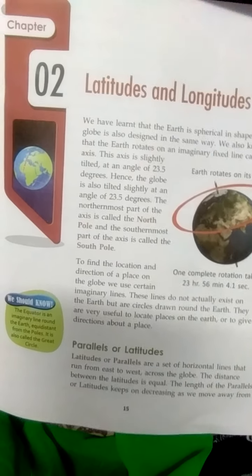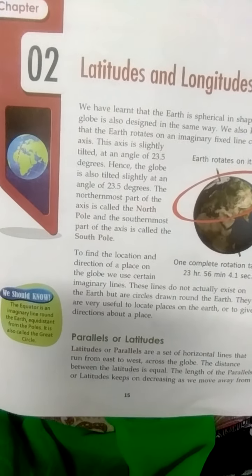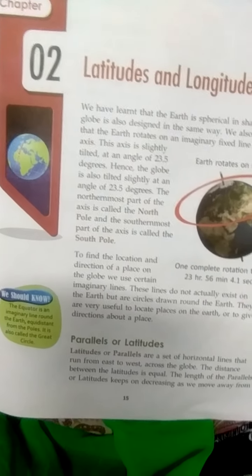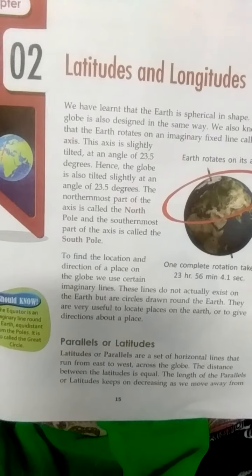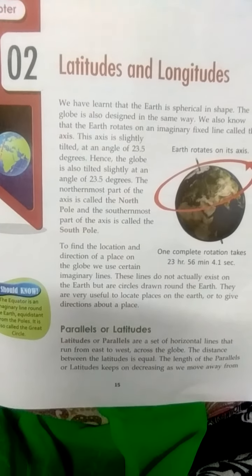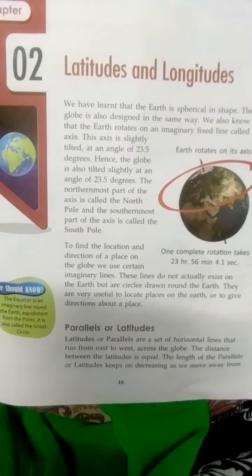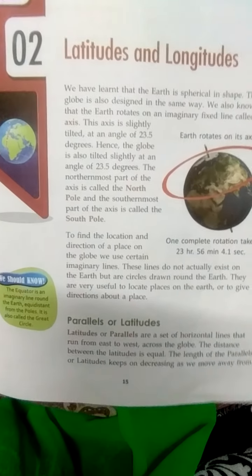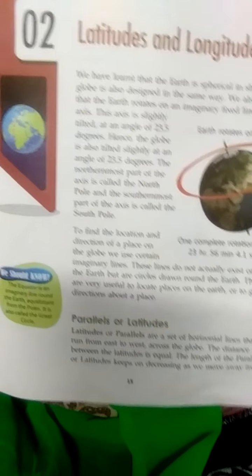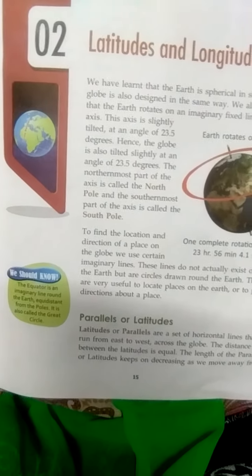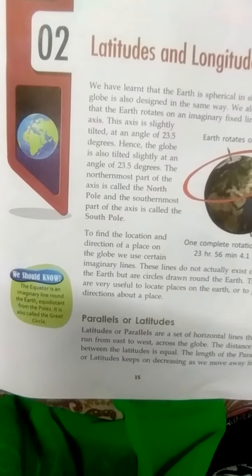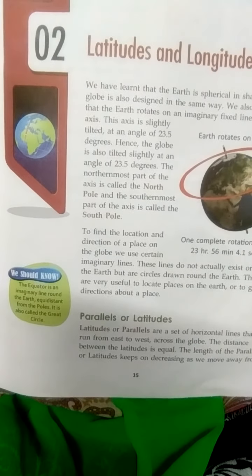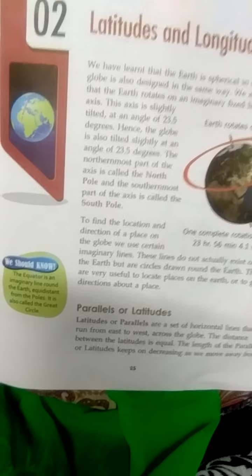To find location, we use certain imaginary lines. These lines do not really exist, but they are drawn as circles on the whole Earth. We imagine these lines, and they help us to locate direction.